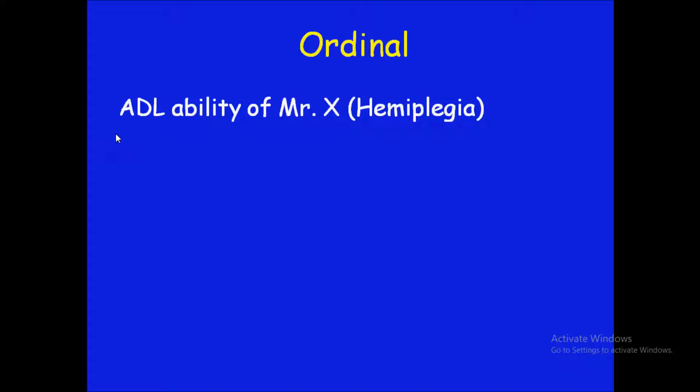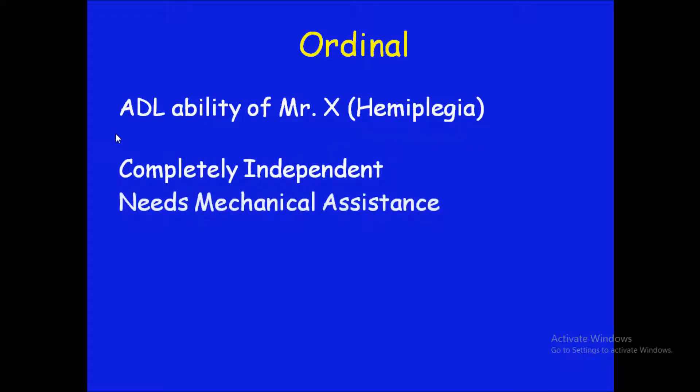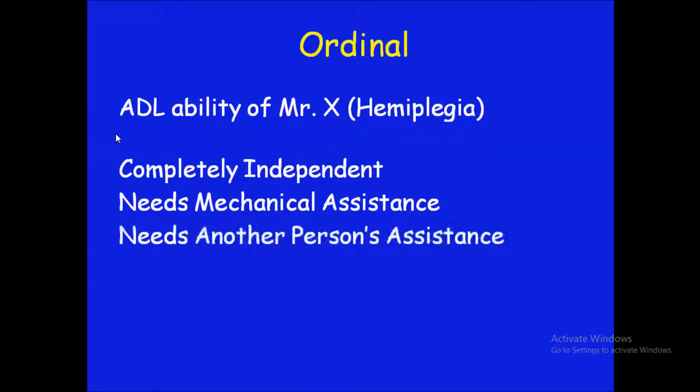Mr. X is suffering with hemiplegia, under treatment, and we are measuring his activities of daily living — how much he is able to do his personal activity — on a four-point scale. It ranges from completely independent, needs mechanical assistance, needs another person's assistance, to completely dependent — from one end to another, from independent to completely dependent.